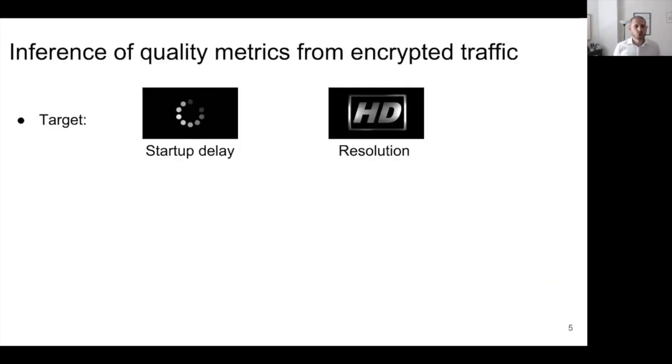But what do we refer to when we say video quality? Inferring the video streaming quality from encrypted network traffic consists in determining a number of metrics that can impact the experience quality of a user. Here we show two examples of this. First, the startup delay, which is the time that takes from the moment the user clicks on the link of the video they're interested in watching and the moment the video actually starts playing, and the resolution, which is the amount of pixels that constitute each frame of the video.